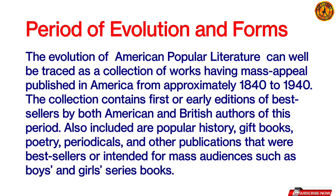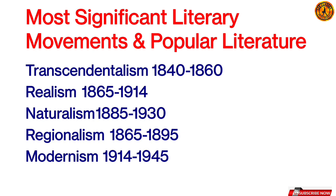They were very popular literature. Like transcendentalism 1840 to 1860, realism 1865 to 1914, naturalism 1885 to 1930, regionalism 1865 to 1895, modernism 1914 to 1945. So from 1840 to 1945, these are the movements that helped popular literature to evolve.